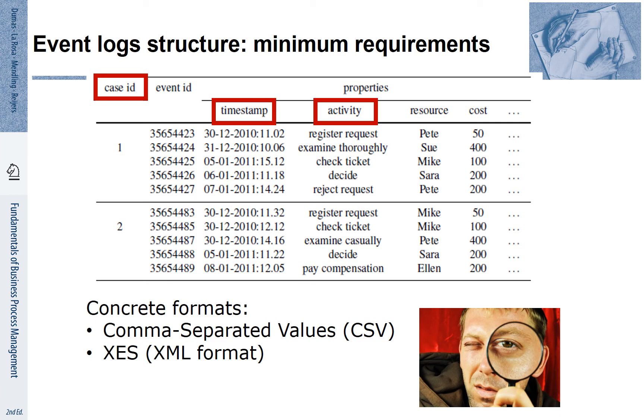Each event also has an event ID and has further properties such as resources or cost. Most important for process mining is that we can associate each of the observed activities with a particular case. Here we see that two case IDs are recorded, case 1 and case 2.